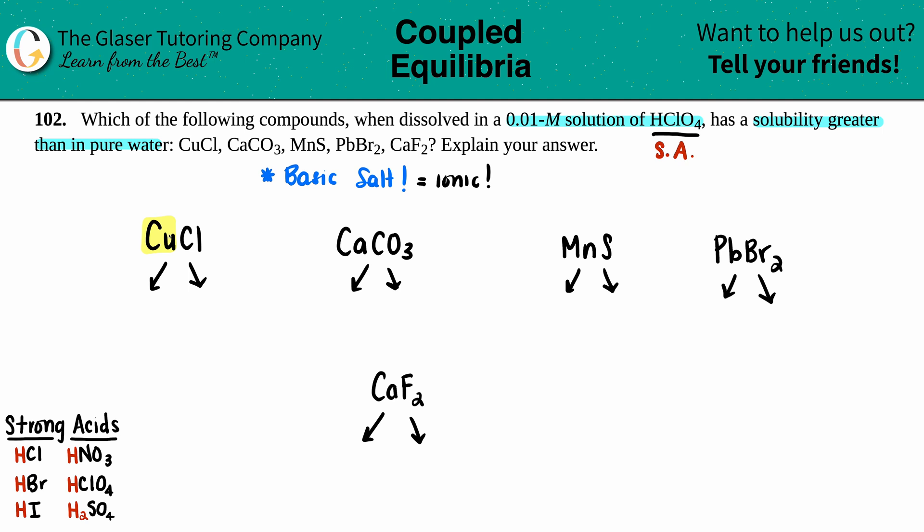The cation is always going to be the element or the polyatomic in the front. So copper, we have calcium, manganese, lead which is Pb, and calcium again. For each one of these, we have Cu+. For this example, it doesn't matter if you know the charges, you just have to figure out which one is the plus and the minus. Calcium is always a 2+ charge, manganese is +2, Pb is also +2, and calcium again which is +2.